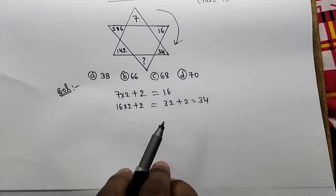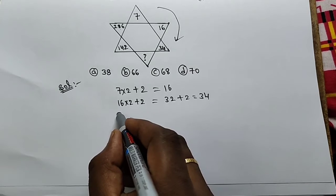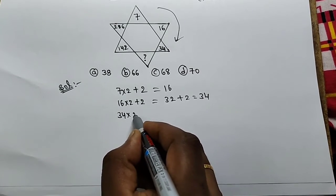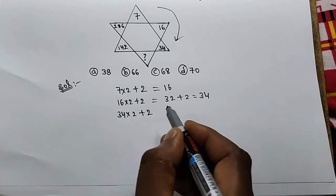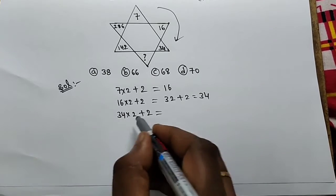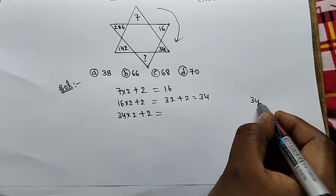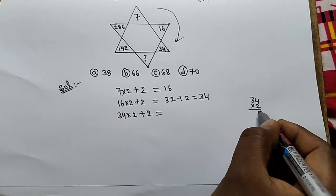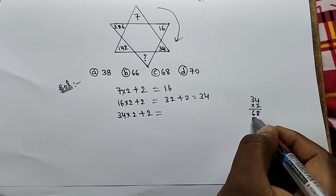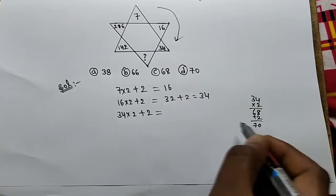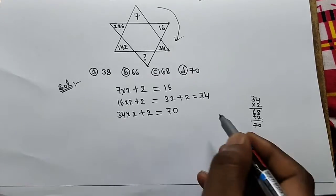Okay, next missing number. 34 into 2 plus 2. 34 times 2 is 68. 68 plus 2 equals 70. 70 is the answer.